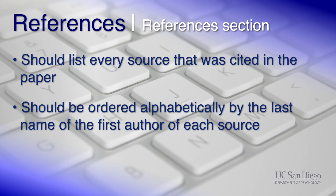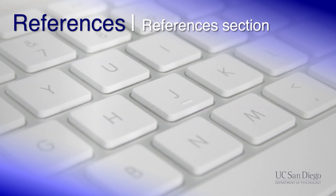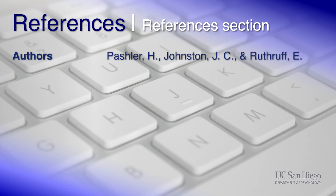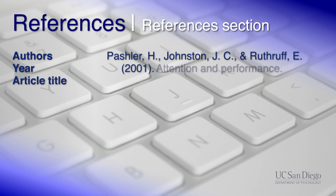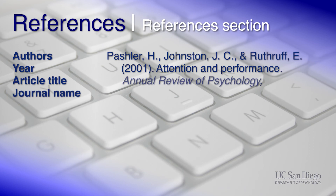Here's how a typical journal article reference should look. First, the authors are listed in order, with last names written out in full and only letters for the first and middle names. Next is the year in parentheses, and then the title of the article. This is followed by the name of the journal in italics.